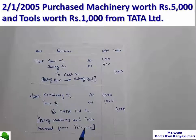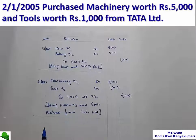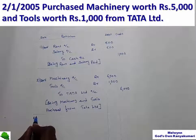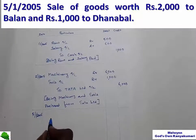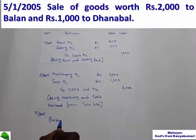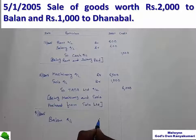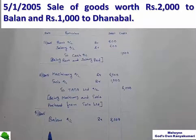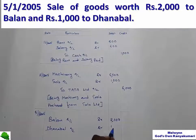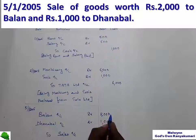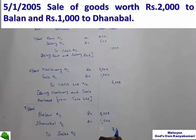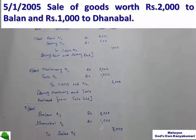5-1-2005: sale of goods worth rupees 2000 to Balan and rupees 1000 to Danabal. Balan account debit 2000, Danabal account debit 1000 — debit the receiver of these goods. What is happening is sales, so to sales account, total 3000.